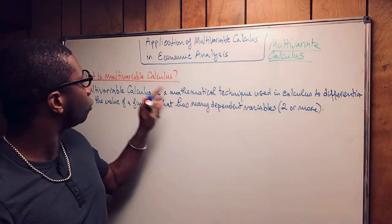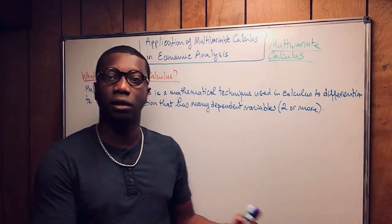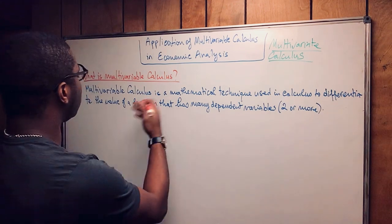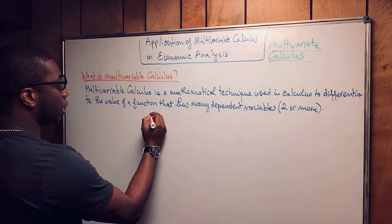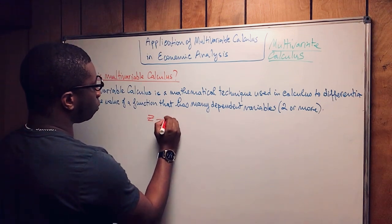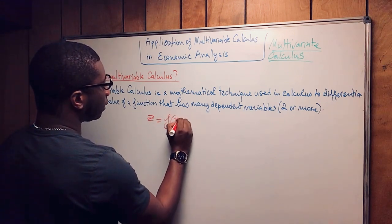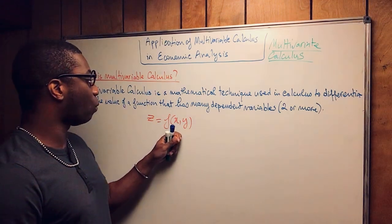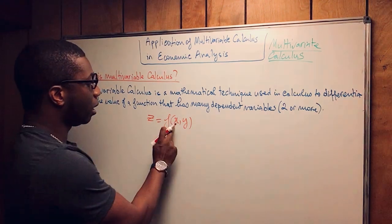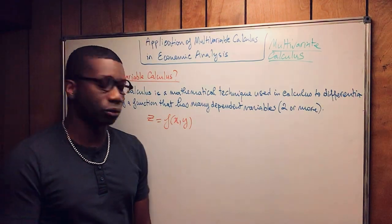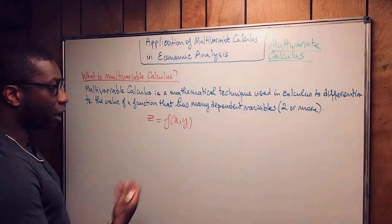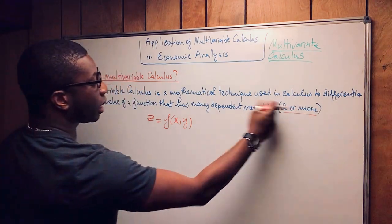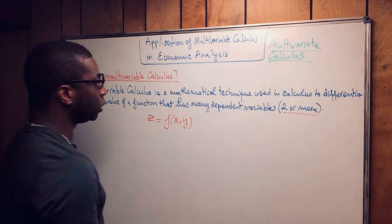The same concept applies here to multivariable calculus in economic analysis. How do you usually write a multivariable function? We call it generally Z. Z equals F of X and Y. So Z equals F of X and Y because X and Y are two dependent variables. Of course, it doesn't stop at two — two or more means you can have more than two dependent variables.